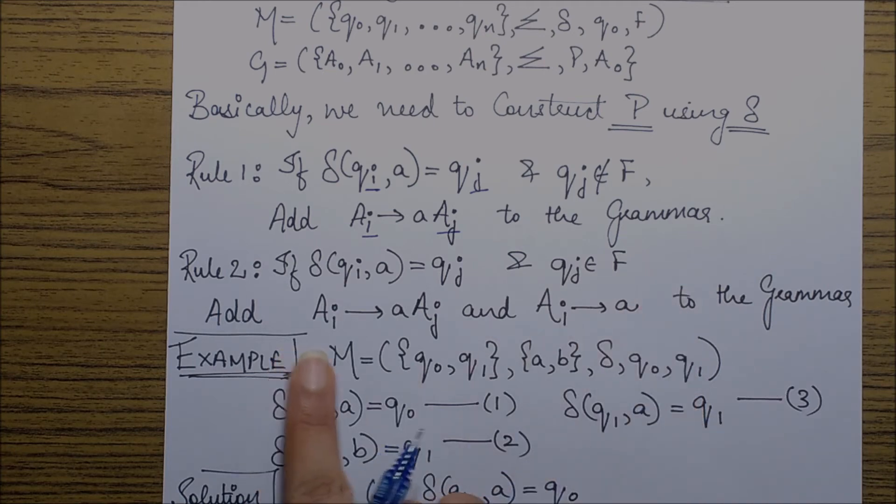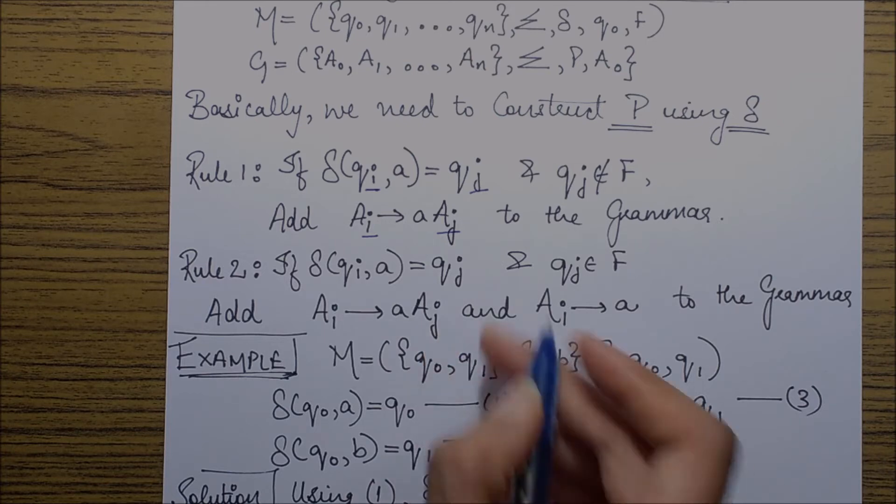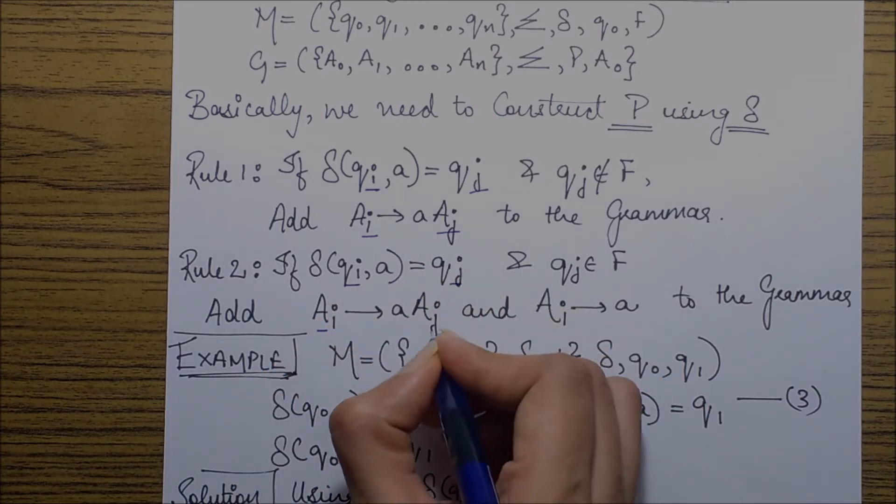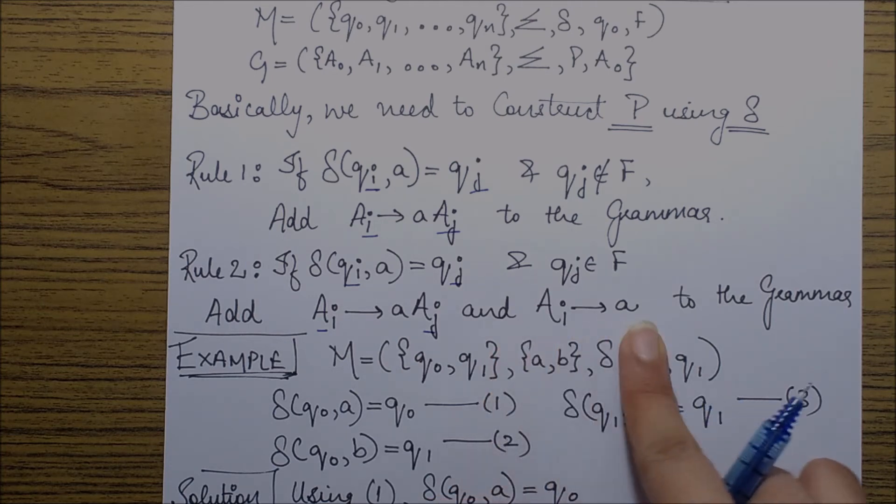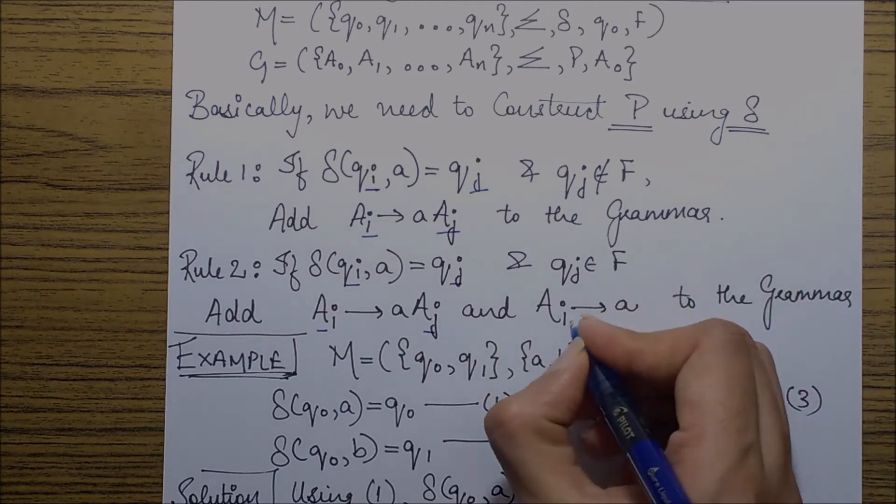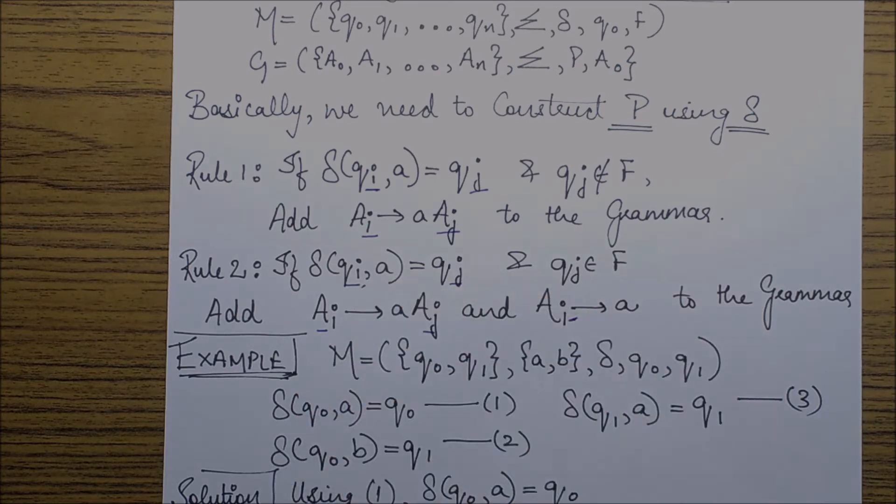Then we need to add the production Ai goes to aAj. Now similarly these subscripts should match and another production which says Ai goes to a, this subscript should match with the qi subscript, to the grammar.